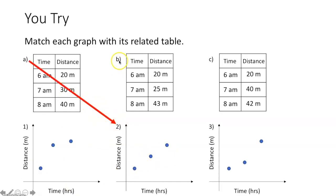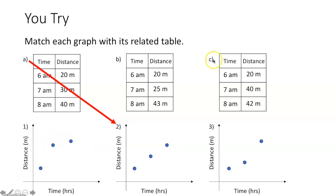For table B, the distance increases 5 meters in the first hour, then increases about 18 meters in the next hour — so increasing slowly then quickly. That's graph three. For table C, we increase 20 meters initially, then only 2 meters after that — increasing a lot then a little. That's graph one. So: table B goes with graph three, and table C goes with graph one.